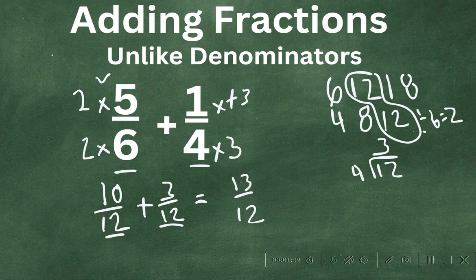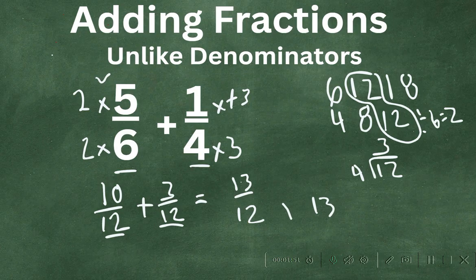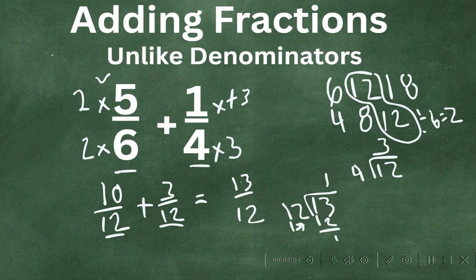If you would like, we can divide 13 by 12 to get a mixed number. 12 goes into 13 one time. 1 times 12 is 12. Oops, I should write this right here. Bring down 1, and so that gives us 1 and 1/12.